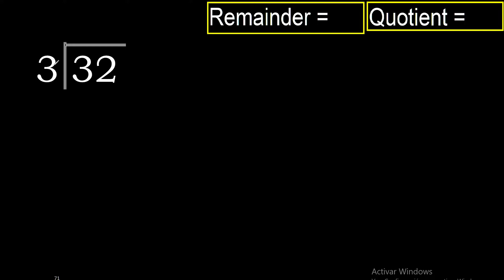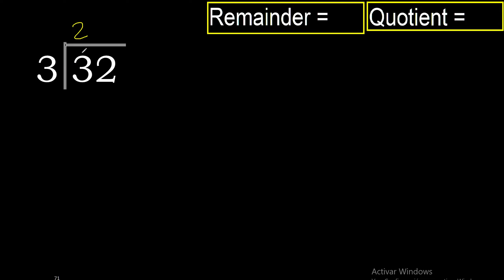32 divided by 3. 3 is not less than 3, therefore work with 3. 3 multiplied by 2 is 6 — excessive. 3 multiplied by 1 is 3.